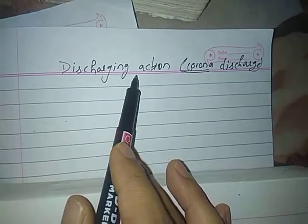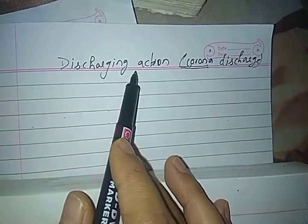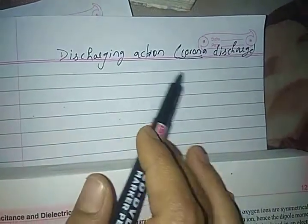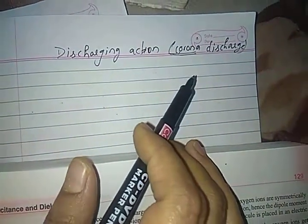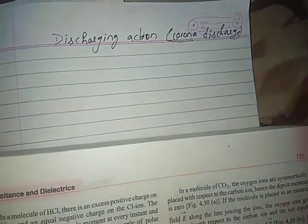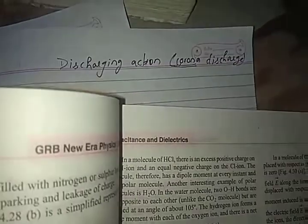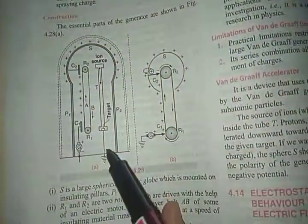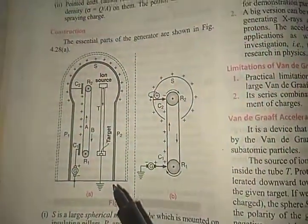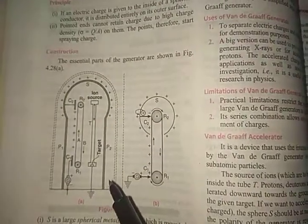The discharging action of charges is known as corona discharge — specifically, the discharging action at the pointed end of a conductor in air. Now let us have a look at the Van de Graaff generator.